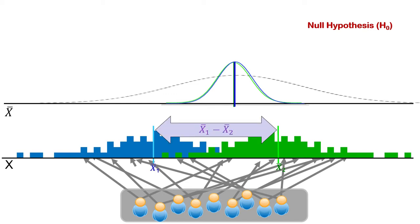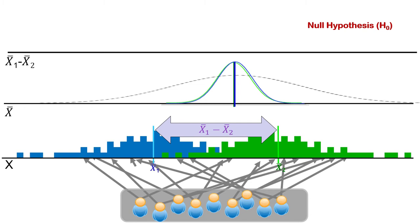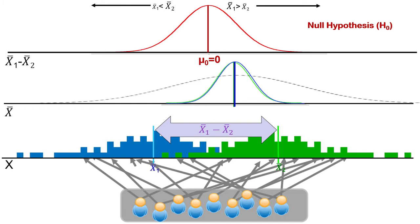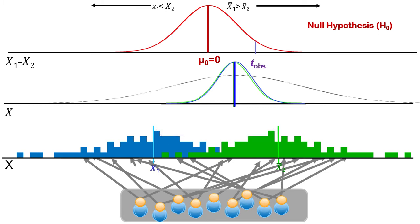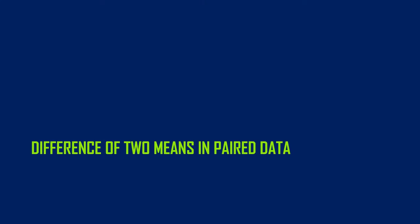In either case, we measure this difference — just like an independent samples t-test — and then we look at all possible differences between means that could have happened if the null hypothesis were true. The null says there's no difference between these means, therefore the difference between sample means on average should be zero. Our sample mean might be different, giving us a t-observed score, and the area beyond that is our p-value. That's the independent sample setup; the paired sample setup is pretty much the same.